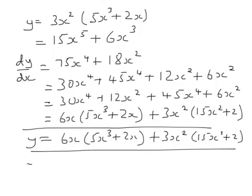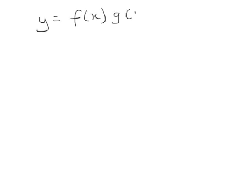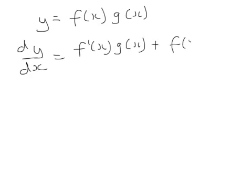But let's just see what the rule is. If I've got y equal to f of x multiplied by g of x, then dy by dx is f dashed x times g of x plus f of x times g dashed x. This is called the product rule, because these are functions that are multiplied together, and this is a way of differentiating them.